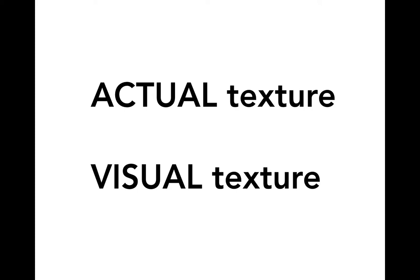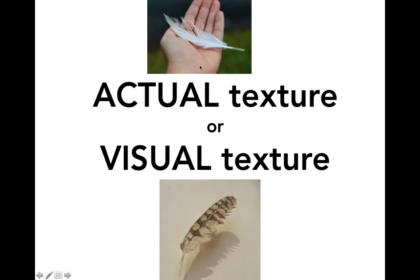What we just did in this activity is that in your bag was an example of something that was actual texture, whereas up on the screen what you were looking at is what we call visual texture. So if I have a feather in my hand I can actually feel the texture, whereas if I'm looking at a feather that's painted on a piece of paper I can imagine what that texture is like.